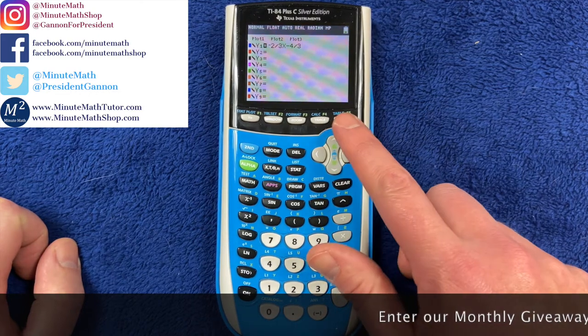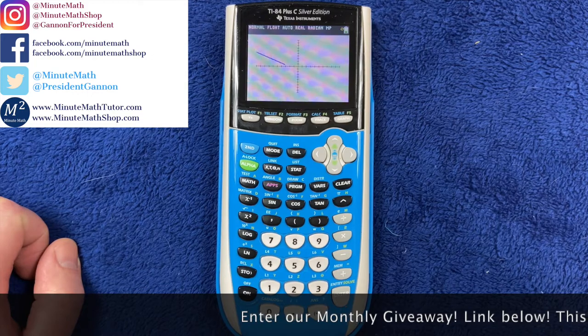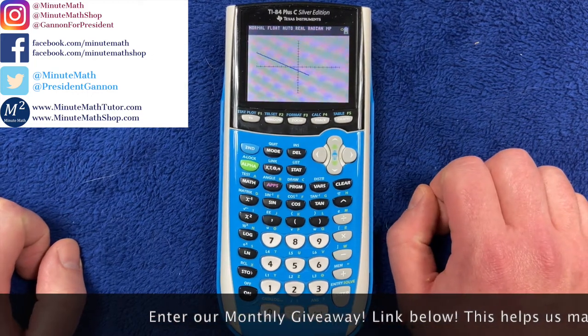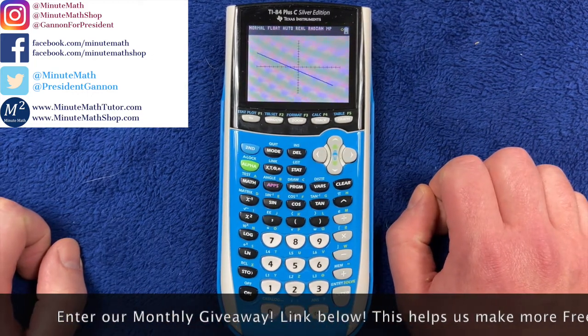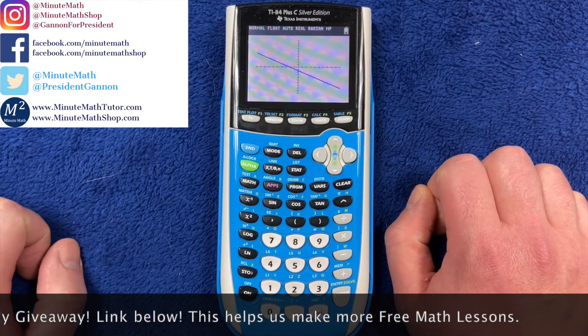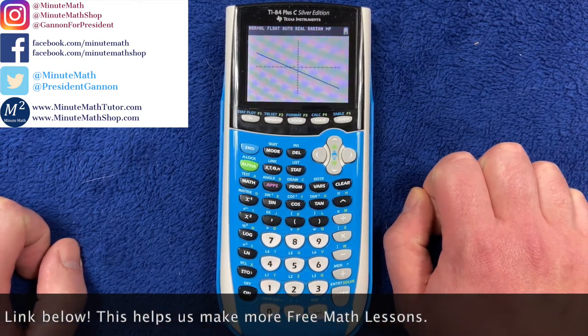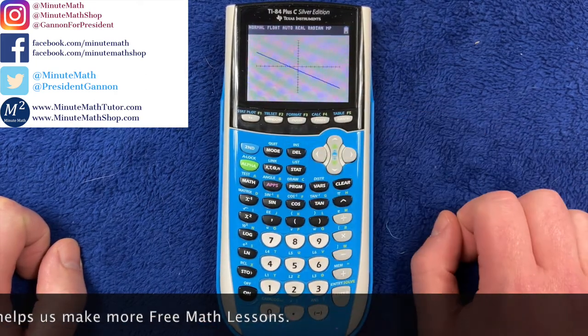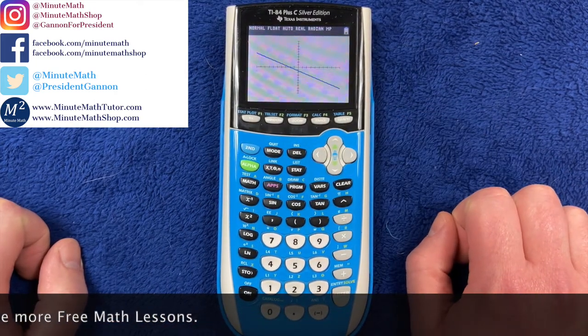And if we graph that, we can see that this graph, negative 2 thirds x minus 4 thirds, crosses right there, crosses the y axis at negative 4 thirds, and has a slope of negative 2 thirds there.